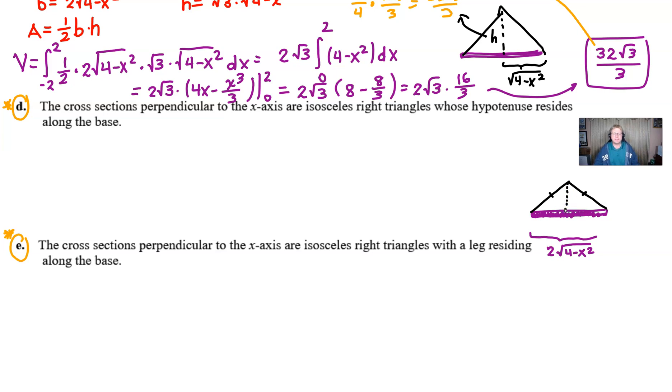Now, we know the base. No argument there. But what we have to determine is this height. And that's where things get a little bit tricky. So we start that process off by understanding that that altitude is going to intersect the base and cut it in half. So we just have one square root of four minus x squared.